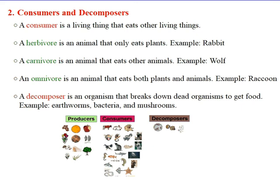Second, a carnivore — it's an animal that eats other animals. For example, the wolf. And third, an omnivore — it's an animal that eats both plants and animals. For example, the raccoon. A decomposer is an organism that breaks down dead organisms to get food. Earthworms, bacteria, and mushrooms are all examples of decomposers.